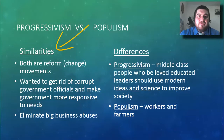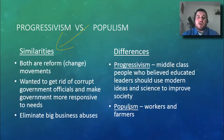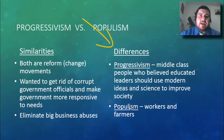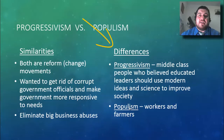Progressivism versus populism: both are reform movements that want to get rid of corrupt government officials, make government more responsive to the needs of people, and eliminate big business abuses. But the difference is where the movements come from. Progressivism is mostly middle-class people who believe educated people should be leaders using modern ideas and science, whereas populism was mostly farmers. Progressivism kind of steals populism's thunder and gets credit for many things populism came up with first.